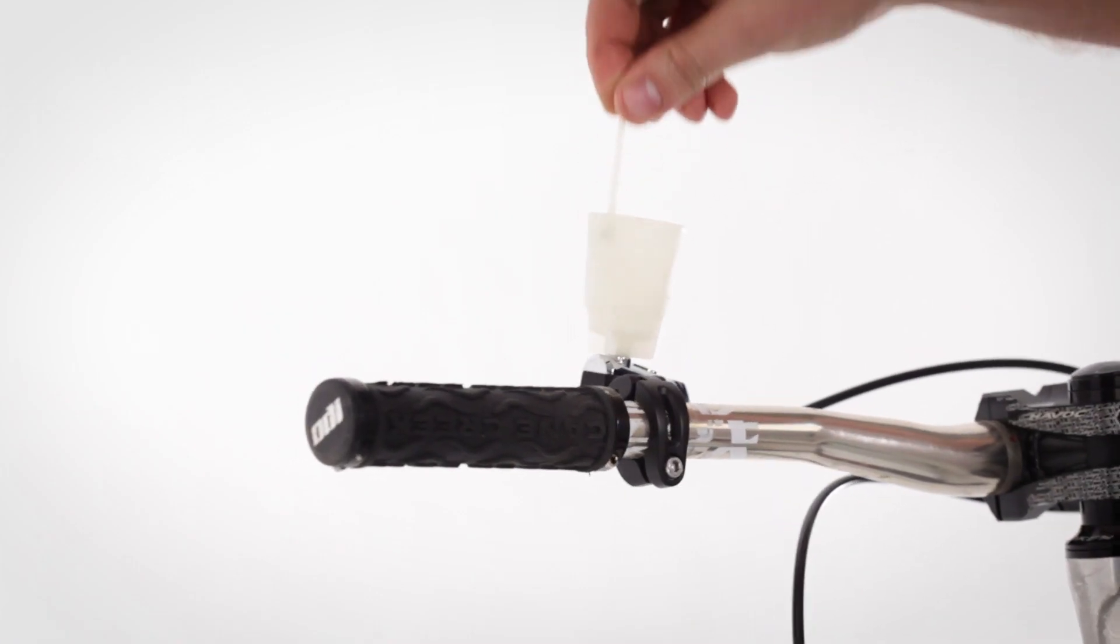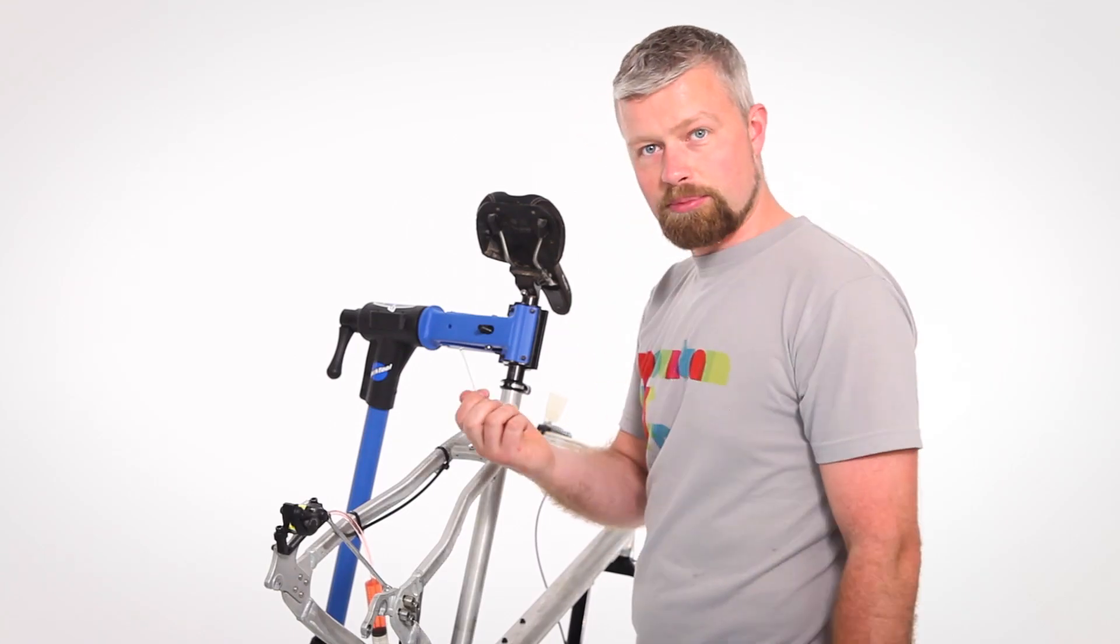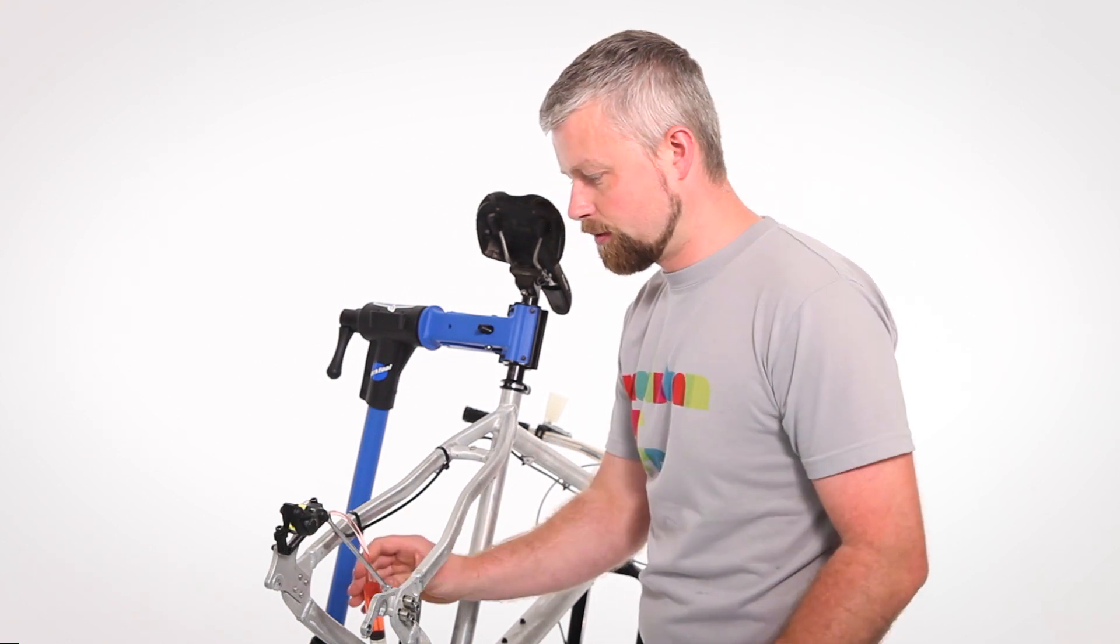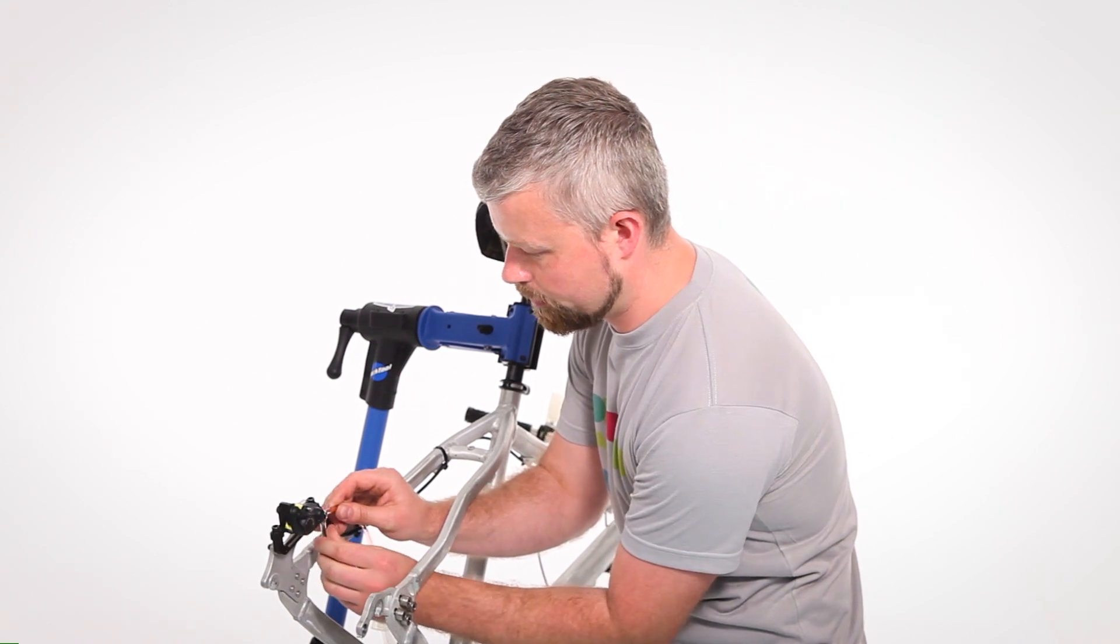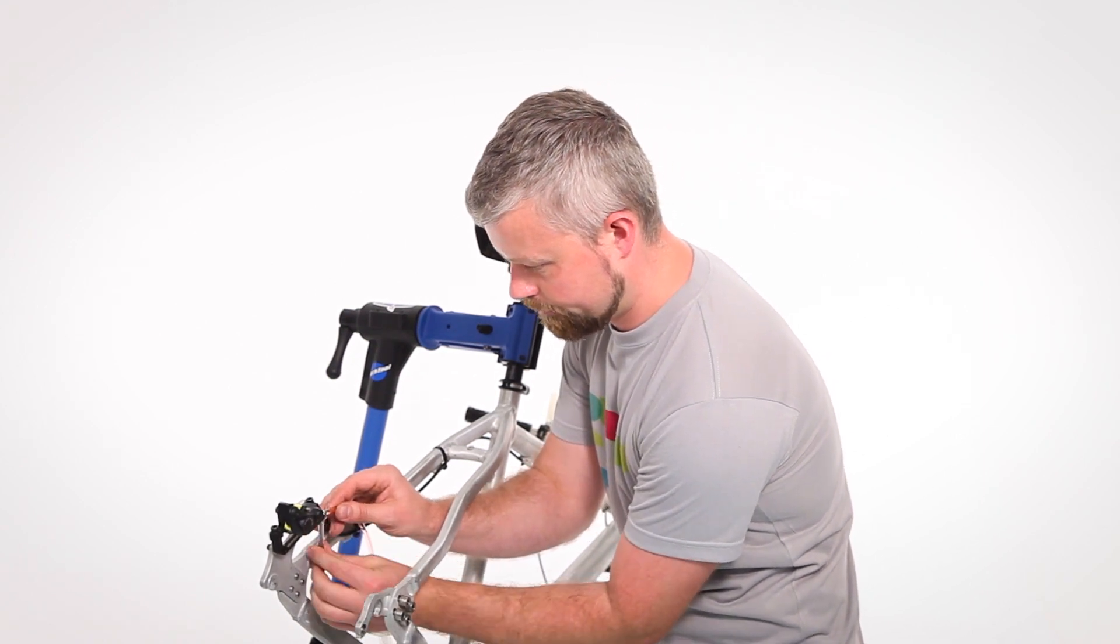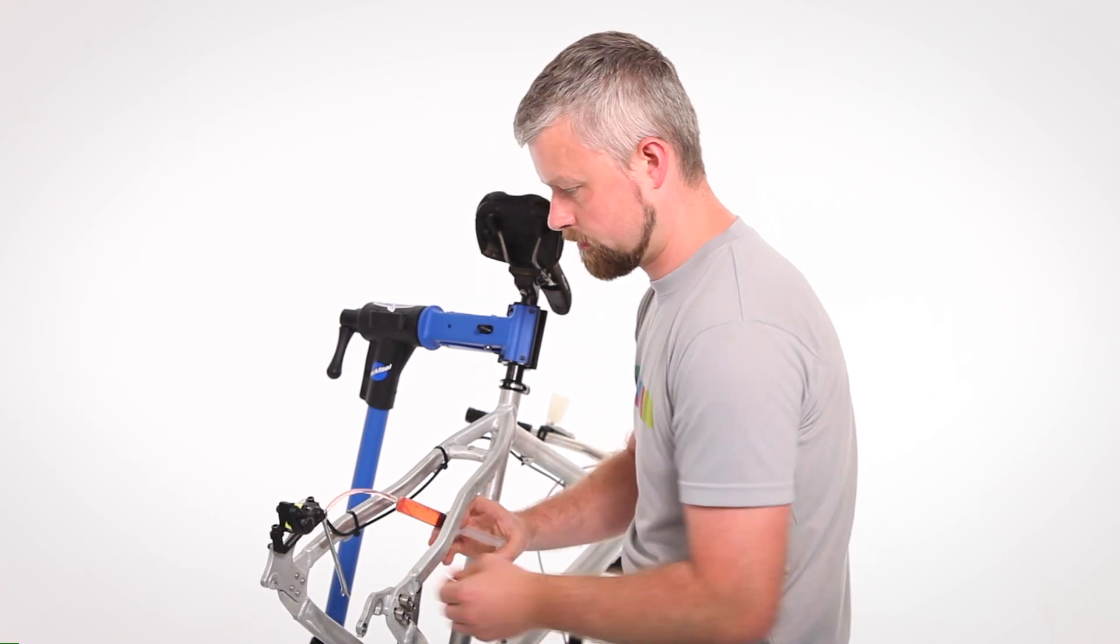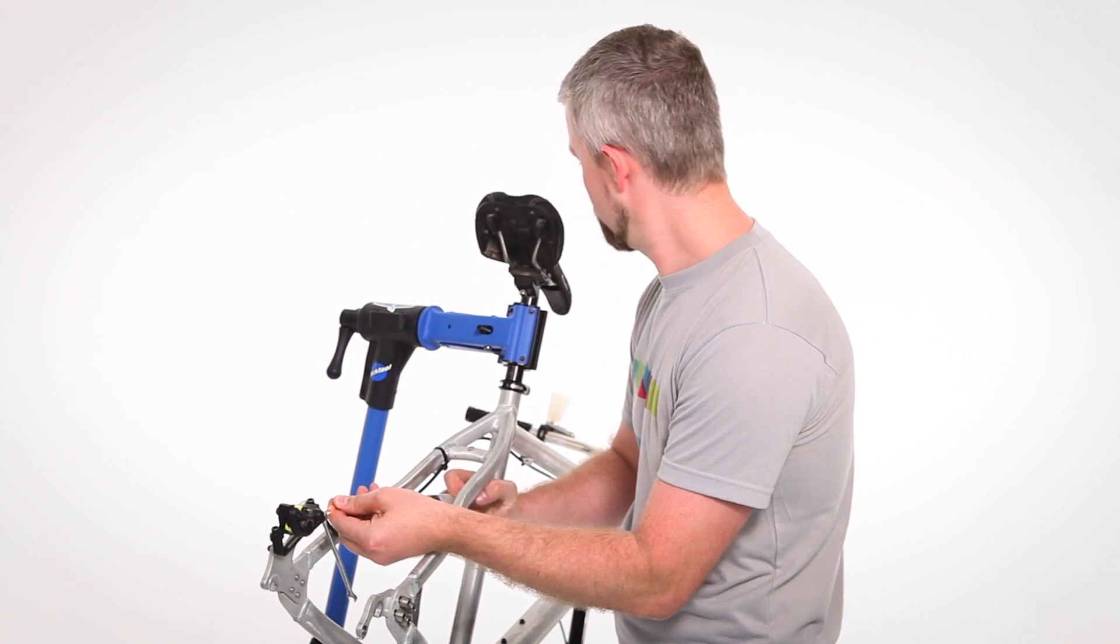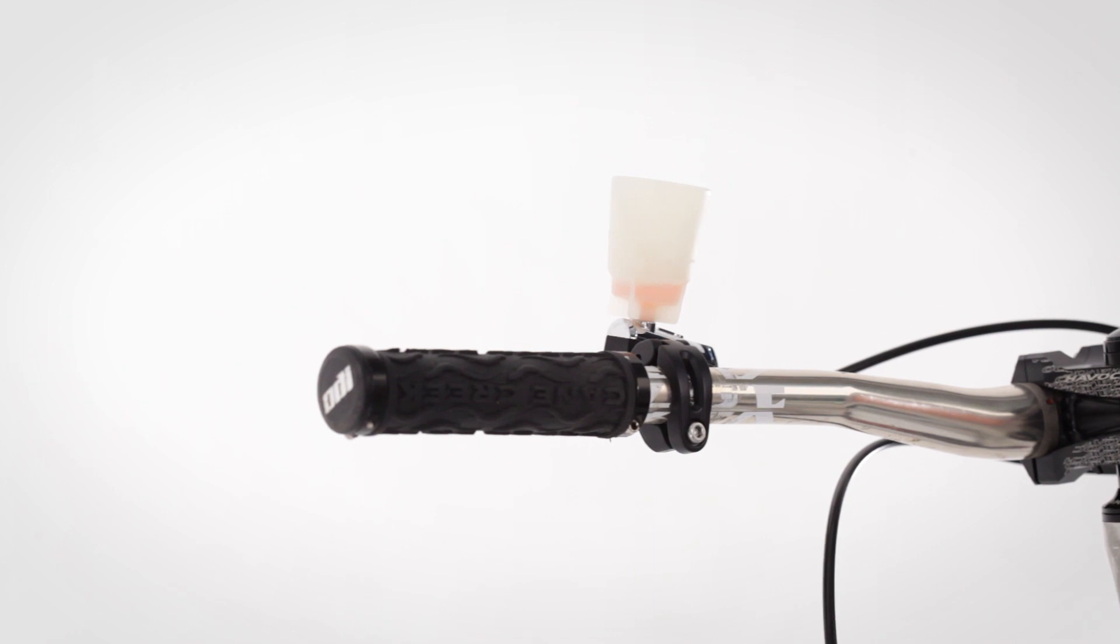We need to make sure the plunger is out of our bleed tool, and we can pass some fluid through the system. So if you crack the bleed nipple open and carefully push fluid through the system, you will see it rise up into the funnel.